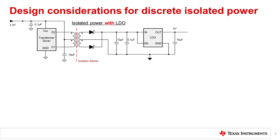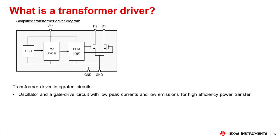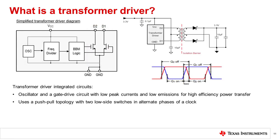Before we review the design guidelines for this isolated power solution, let's take a moment to discuss some transformer driver basics. What is a transformer driver? A transformer driver IC is an oscillator and gate drive circuit. By scaling the transformer turns ratio to step up or down with different voltage configurations, transformer drivers provide an easy way to control the output voltage from very low voltages to as high as 24 volts or more.